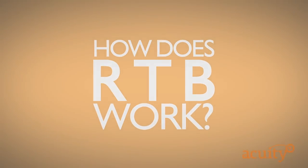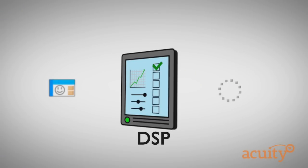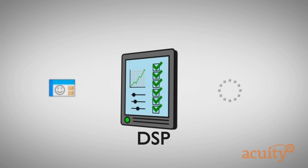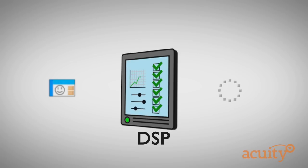How does RTB work? There are three prominent players in the RTB landscape. The demand-side platform, known as the DSP. The DSP is a tool that automates the purchasing of online advertising on behalf of advertisers. Advertisers use DSPs to set the buying parameters of their campaigns and to monitor campaign performance.